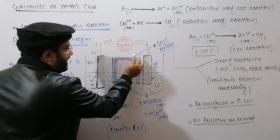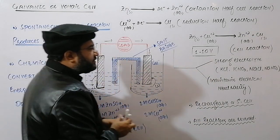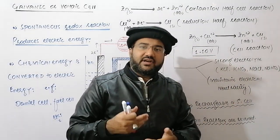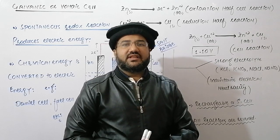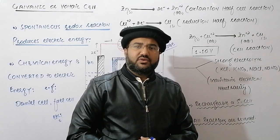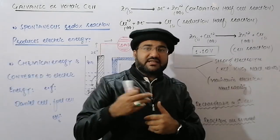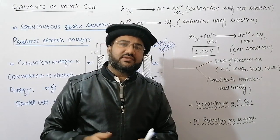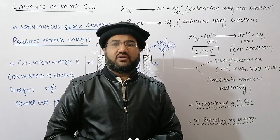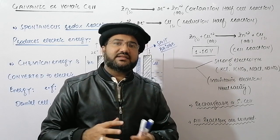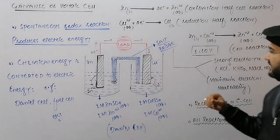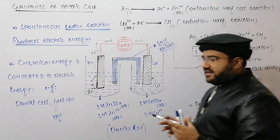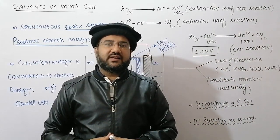The salt bridge is basically a glass tube filled with a strong electrolyte like KCl, KNO₃, NaCl, or NaNO₃, mixed with agar gel. The agar gel and salt mixture is filled in the glass tube to make a salt bridge. The gel is used just to prevent the mixing of the two electrolytes or their ions. The function of the salt bridge is to maintain electrical neutrality, or in other words, to prevent charge accumulation in the galvanic cell.